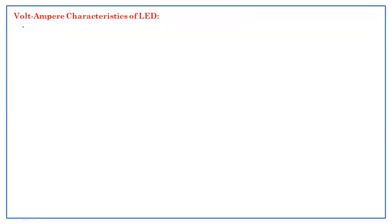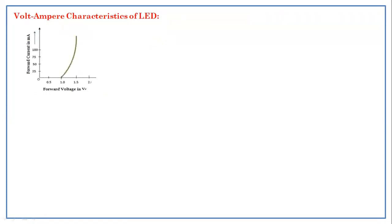If you see the voltage and current characteristics of the LED: the forward voltage is indicated by Vf and the forward current by IF. Up to a certain point there is no conduction; after that point it starts conducting. It is the same as a PN junction diode. If you increase the voltage continuously, different colors appear in the LED.